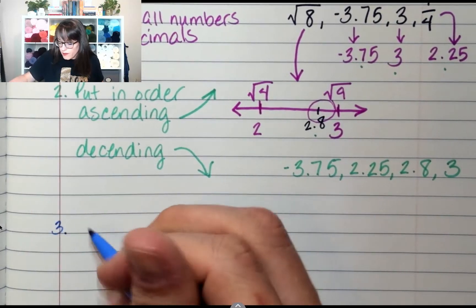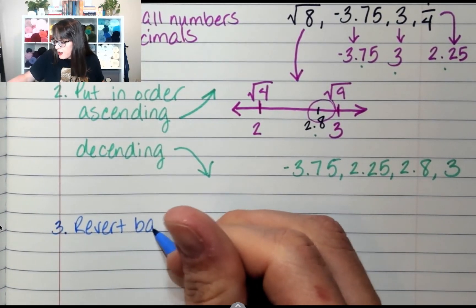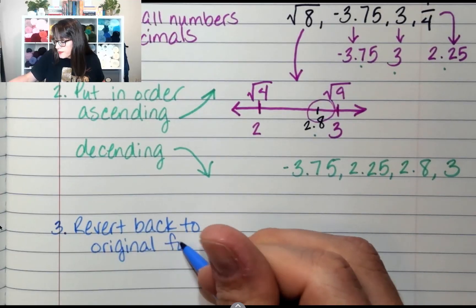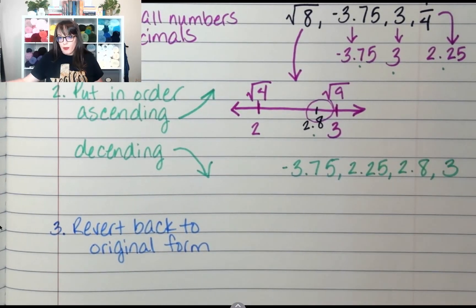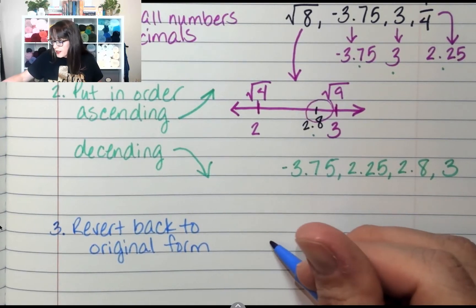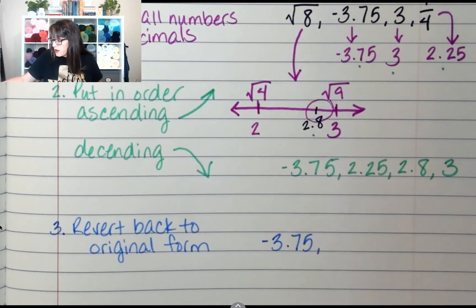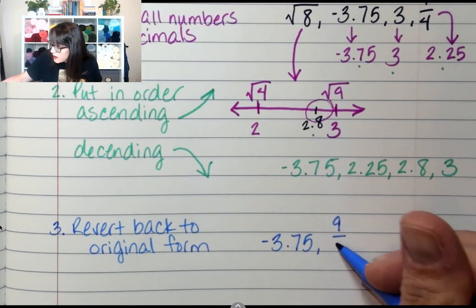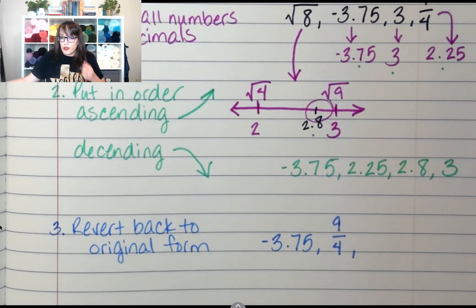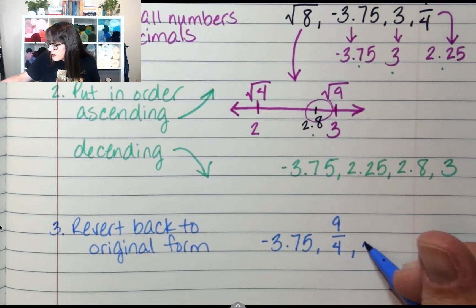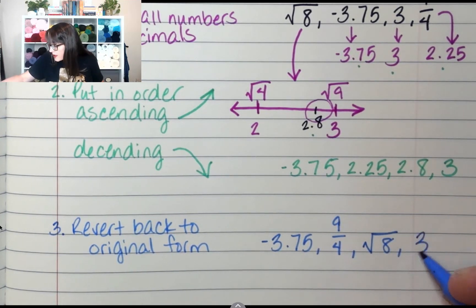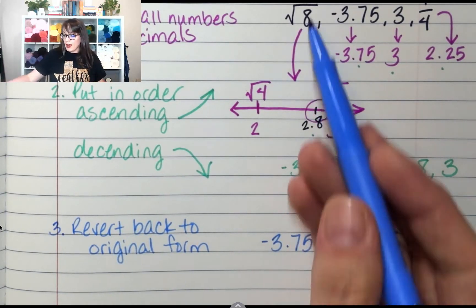So negative 3.75 was originally negative 3.75. 2.25 was originally 9 over 4. 2.8 was originally square root of 8. And 3 was 3. So to put these numbers in order, we had an irrational number, we had a negative decimal, we had a whole number, and we had a fraction.